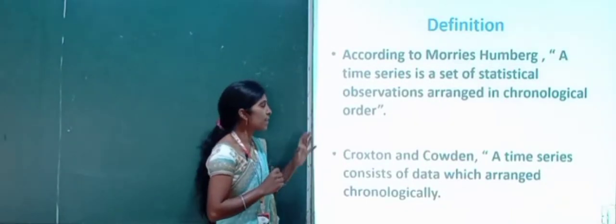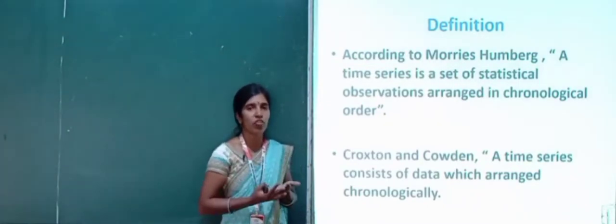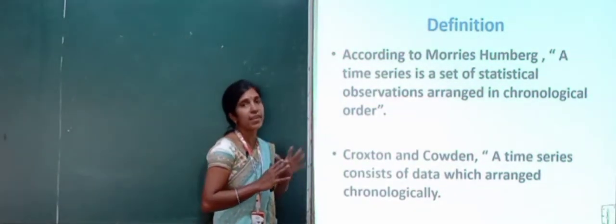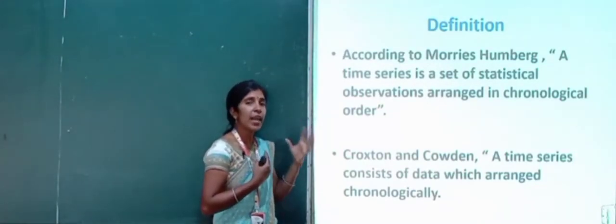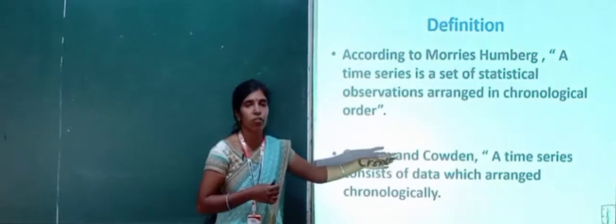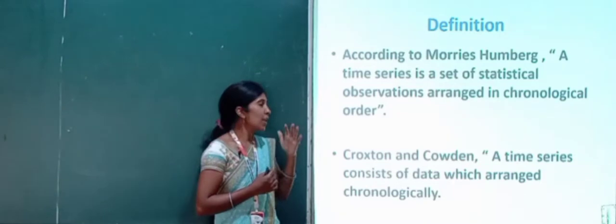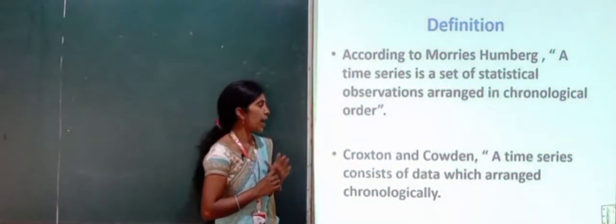According to Croxton and Cowden, a time series consists of data. Data means information about numbers, facts and figures, which should be collected and arranged in chronological order. Whatever collected data is there should be arranged chronologically. These are the two definitions given by Maurice Humberg and Croxton and Cowden.